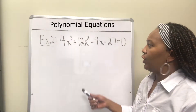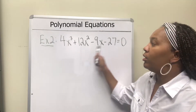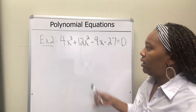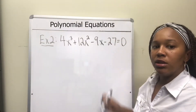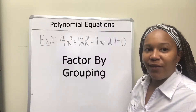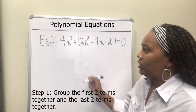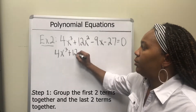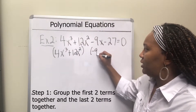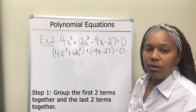Example 2: solve 4x³ + 12x² − 9x − 27 = 0. This is a third degree polynomial, meaning the highest exponent is 3. We need to factor it first. Since there are four terms, we can try factoring by grouping. The first step is to group the first two terms together and the last two terms together — just put them in parentheses. The minus sign stays with the 9, and we put a plus in between the groups.